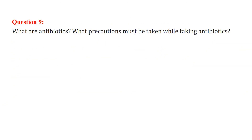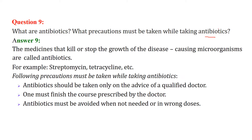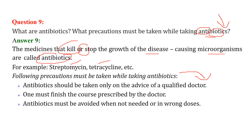What are antibiotics? What precautions must be taken while taking antibiotics? Antibiotics are medicines that kill or stop the growth of disease-causing microorganisms. For example, streptomycin and tetracycline. Precautions: antibiotics must be taken under the guidance of a qualified doctor, and you should complete the full course. For example, if you have a sore throat just beginning, don't start taking antibiotics immediately — always wait, as antibiotics themselves contain microorganisms and should not be used carelessly.